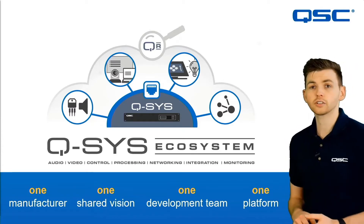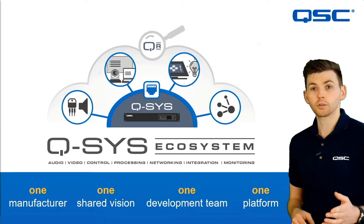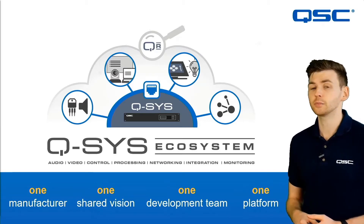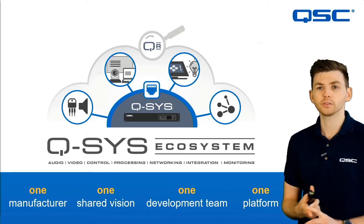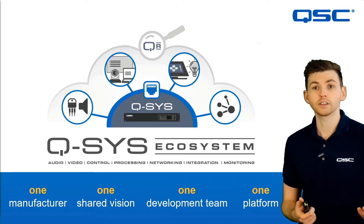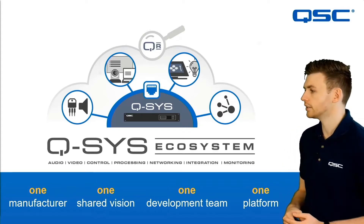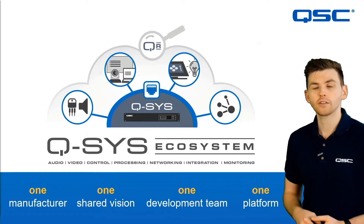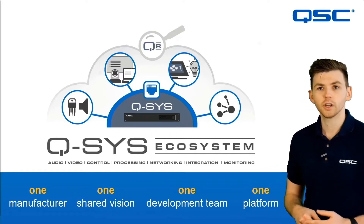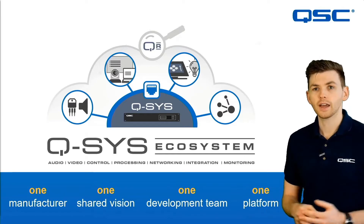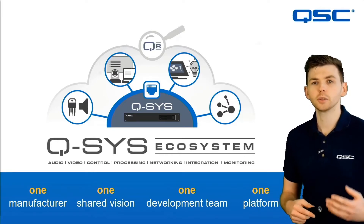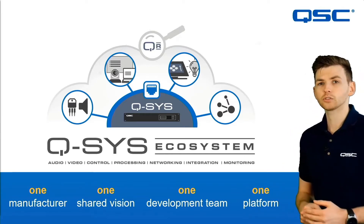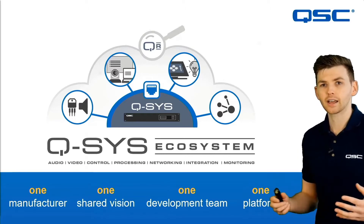We have a Q-SYS core which is designed to do all processing, and then around that we have native Q-SYS peripherals — these can be audio endpoints, video endpoints, or control interfaces. This means that instead of several systems which you need to make work together seamlessly, you have a single system to process all of your AV, which means everything is much easier to program, easier to monitor and manage, and also much more powerful and easier to scale up.